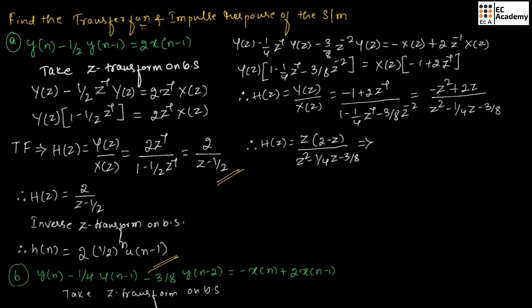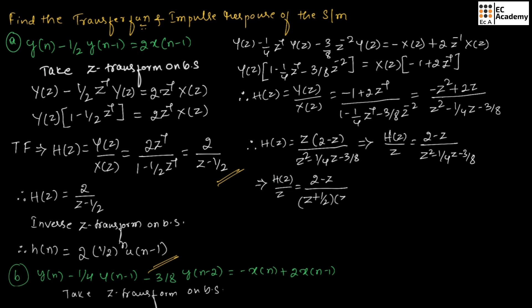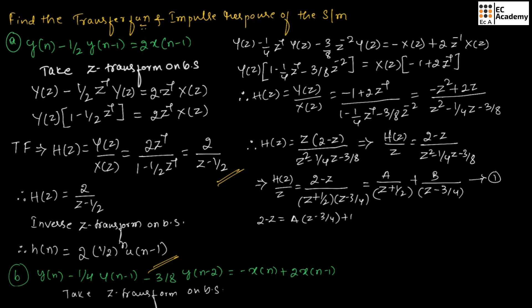From this equation, we can write H(z)/z = (2 - z) / (z² - 1/4 z - 3/8). We can factor the denominator as (z + 1/2)(z - 3/4). So using partial fractions, we can write this as A/(z + 1/2) + B/(z - 3/4). Let us call this equation number 1. Therefore, 2 - z = A·(z - 3/4) + B·(z + 1/2). Let us call this equation number 2.